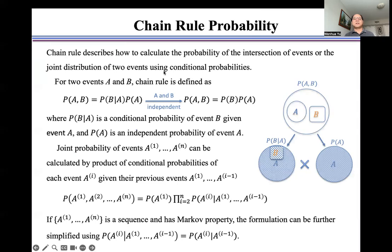For two events A and B, chain rule is defined as the joint probability of A and B equals the product of conditional probability of B given A and independent probability of A.